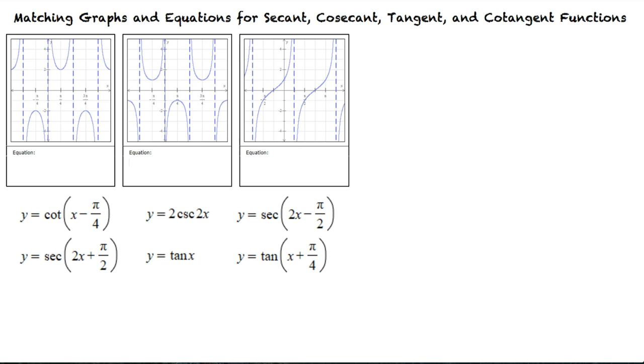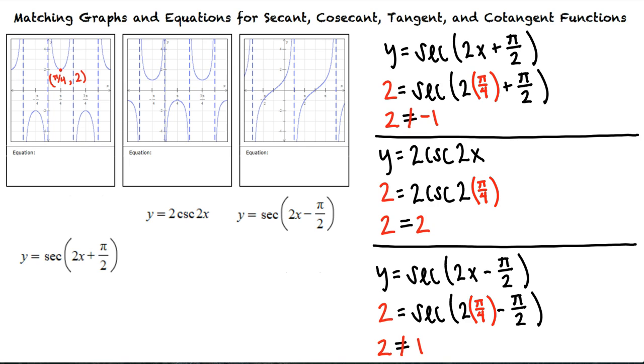Let's begin with the graph on the left. Using our knowledge of general trig functions, we know that this is the graph of either a secant or cosecant function. We see that this graph contains the point π/4, 2. We can check which equation has this point as a solution. This point is a solution only for y = 2csc(2x), so this is the equation that matches this graph.